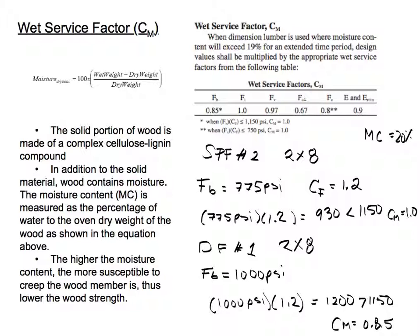I have an example here, we have two wooden members. The NDS says when the dimension lumber is used where moisture content will exceed 19% for an extended time period, the tabulated values shall be multiplied by the appropriate wet service factors from the following table.